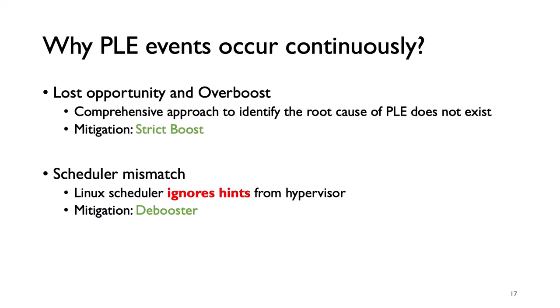I have identified several problems which incur a large number of continuous PLE events. First, lost opportunities and overboost, which are due to the lack of a comprehensive approach to identify the root cause of PLE. I introduce the strict boost mitigation against these problems. The other problem is scheduler mismatch, which is due to the semantic gap between KVM and the Linux scheduler. The Linux scheduler ignores boost requests from the hypervisor, resulting in an impaired vCPU being rescheduled repeatedly before scheduling a boosted vCPU, causing continuous PLE events. I introduce de-boost mitigation against this problem.